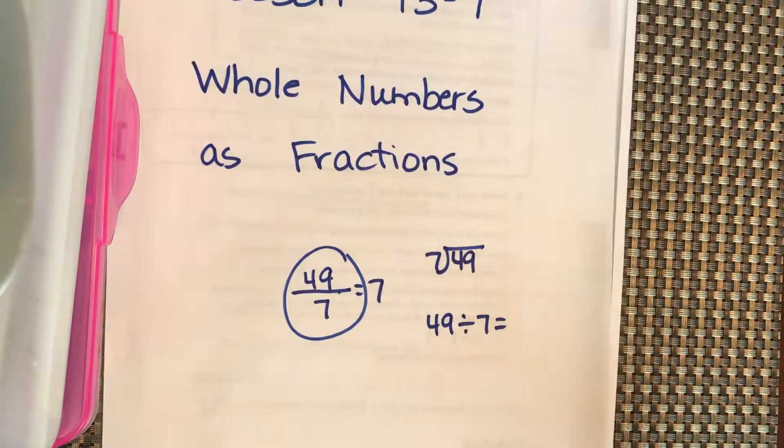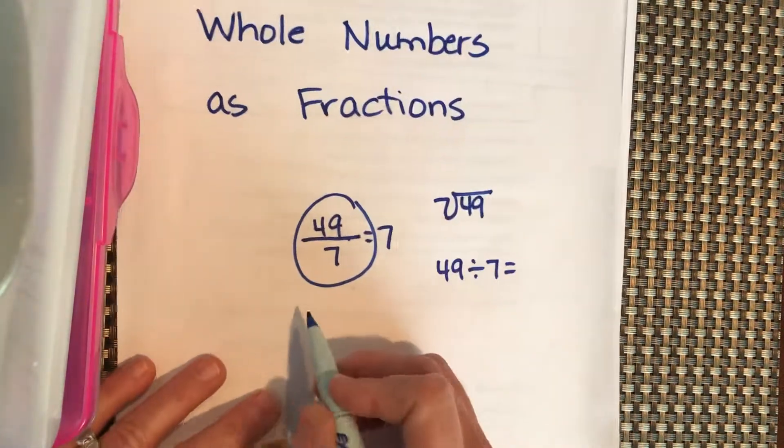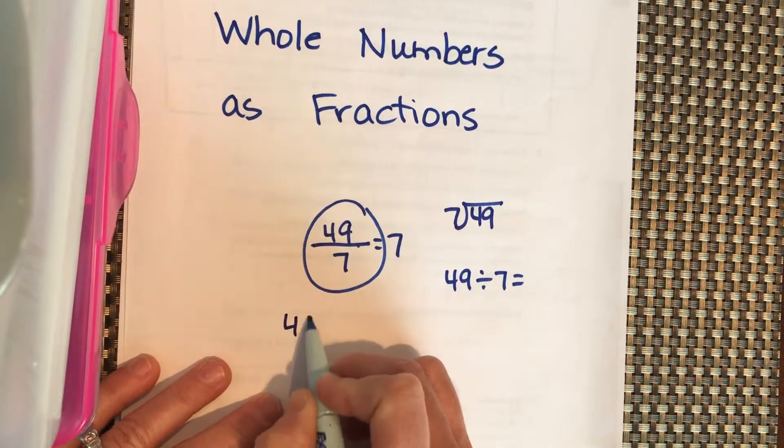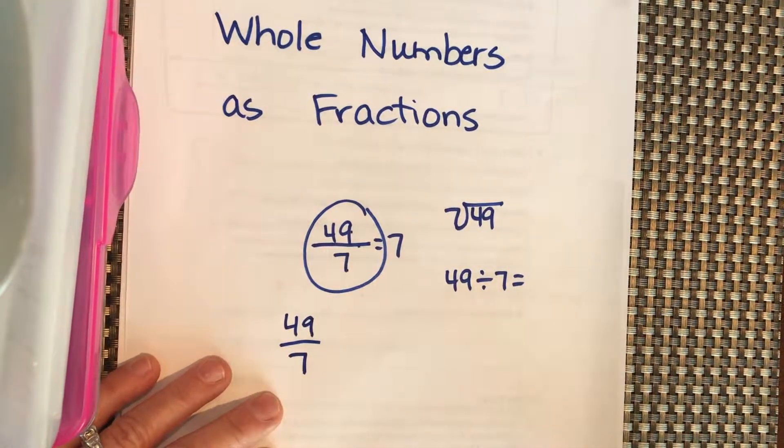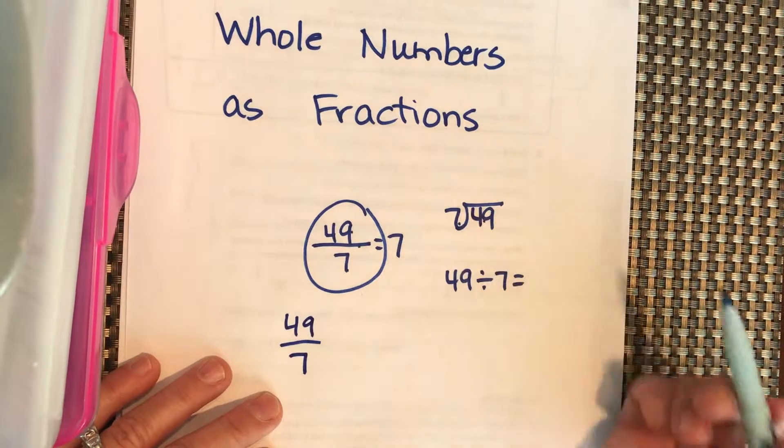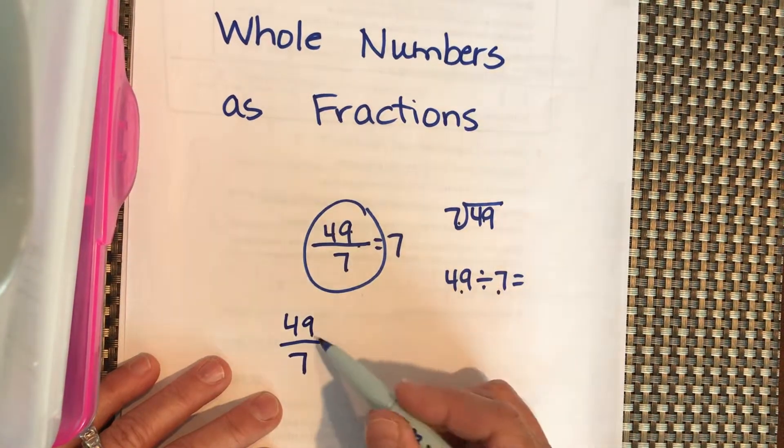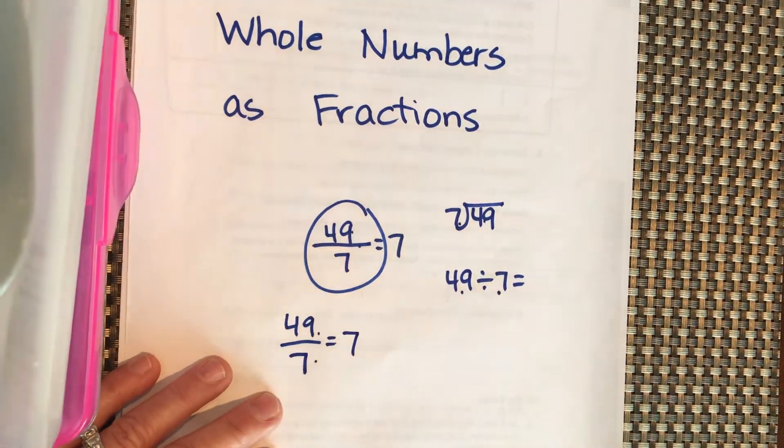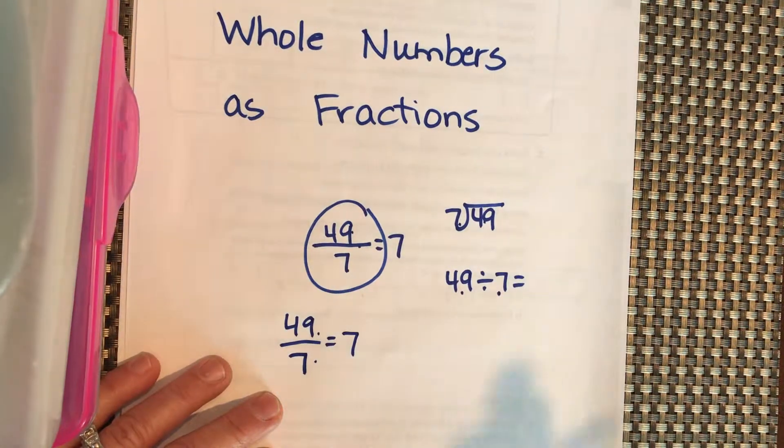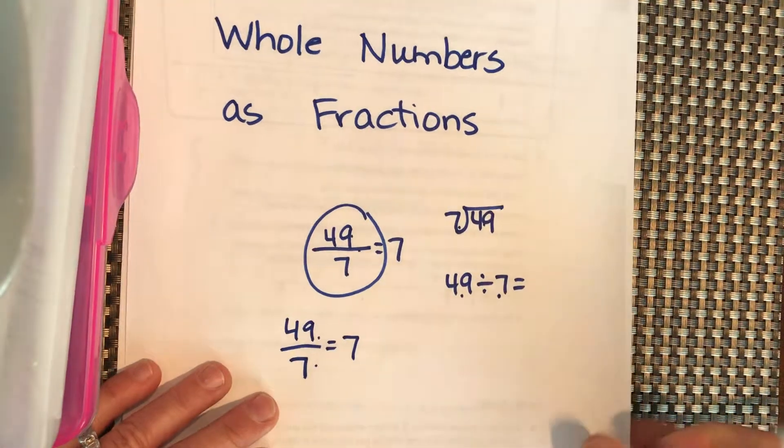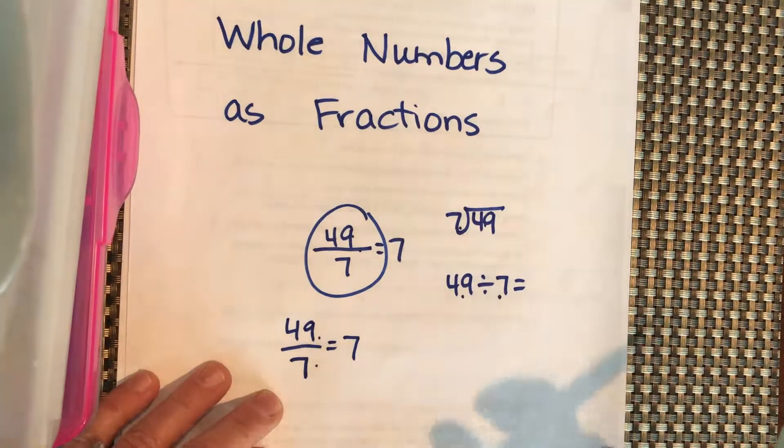The most important thing you have to remember with this lesson is that when we write a fraction, it's division. We can do 49 divided by 7, or 49 over 7. You need to remember that fractions are division.